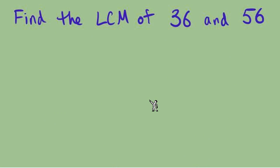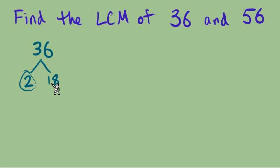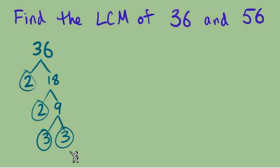Let's move to our next example: find the LCM of 36 and 56. We begin by finding prime factors. For 36, I'll use a factor tree starting with 2 times 18. 2 is a prime factor; 18 we can break further into 2 times 9. That 2 is prime; 9 breaks into 3 times 3, and those are both prime. A quick reminder: it doesn't matter what multiplications you choose in the tree — as long as everything is broken down to prime factors, we'll always end up with 2, 2, 3, 3 for 36.